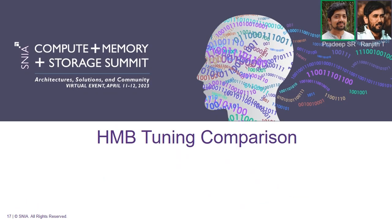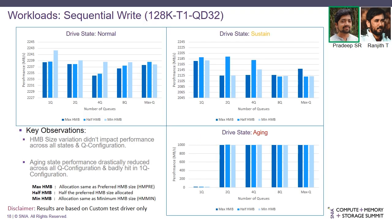Moving on to the next section: HMB tuning comparison. Here we discuss the standalone HMB performance across different HMB sizes and different queue configurations. In the case of sequential write with 128K chunk size, 1 thread, queue depth 32, irrespective of the change in HMB size allocation, across all drive states and queue sizes, the performance was the same.